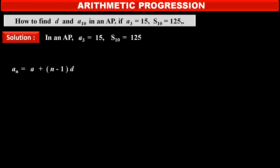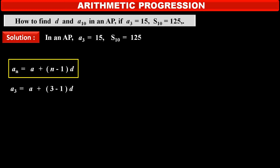We know the formula of nth term: An is equal to first term A plus in bracket n minus 1 into common difference D. Therefore, third term A3 is equal to A plus in bracket 3 minus 1 into D. Given value of A3, that is 15, is equal to A plus 2D. We can write this as A plus 2D is equal to 15. Consider this as statement number 1.